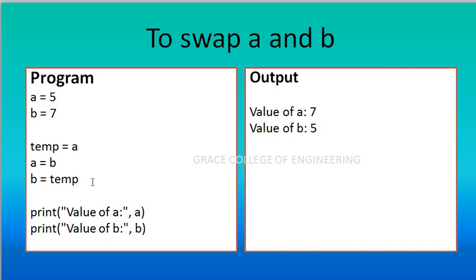So this is how we write the coding — it will be very easy if you know the concept. Then we print: print value of A, then print value of B. The output shows value of A is 7, value of B is 5. Thus the swapping is completed.